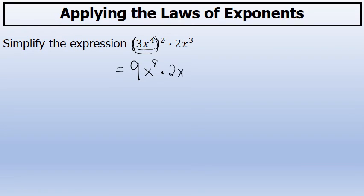The second factor, 2x to the third, at this point is unchanged. The last step is to multiply 9x to the eighth times 2x to the third.